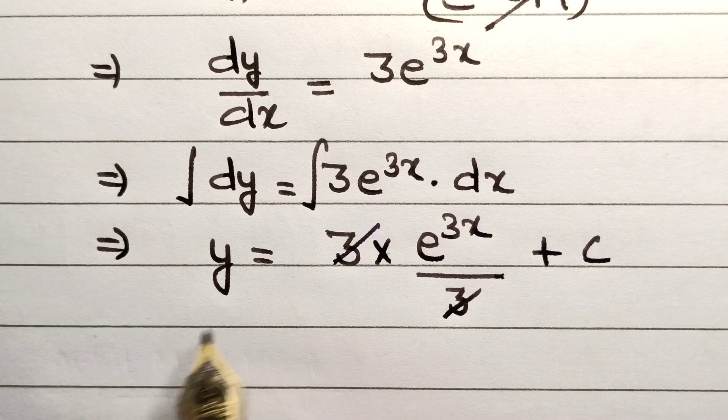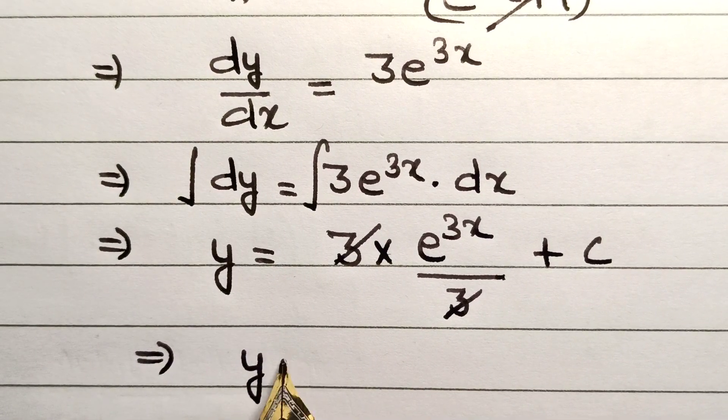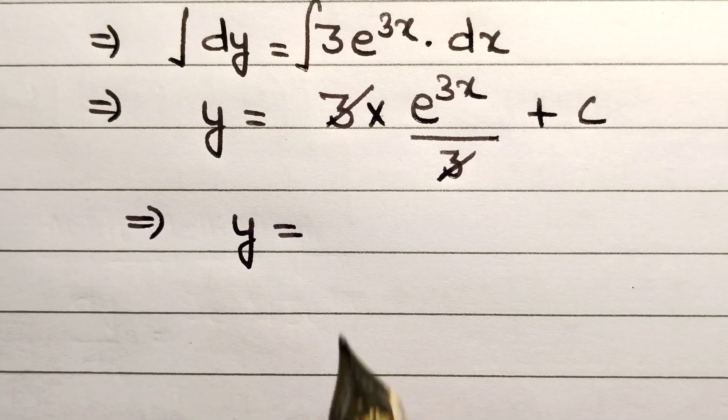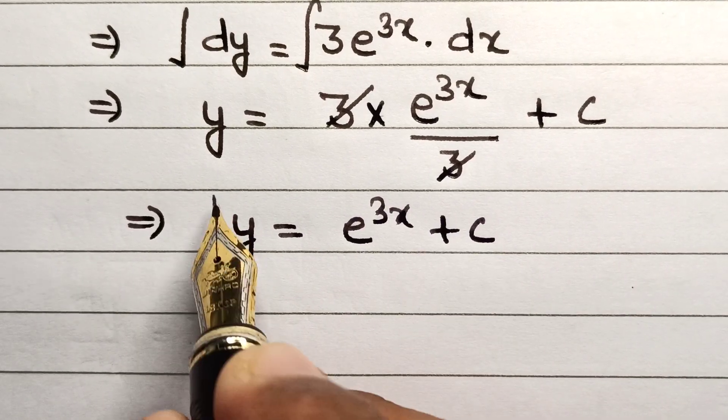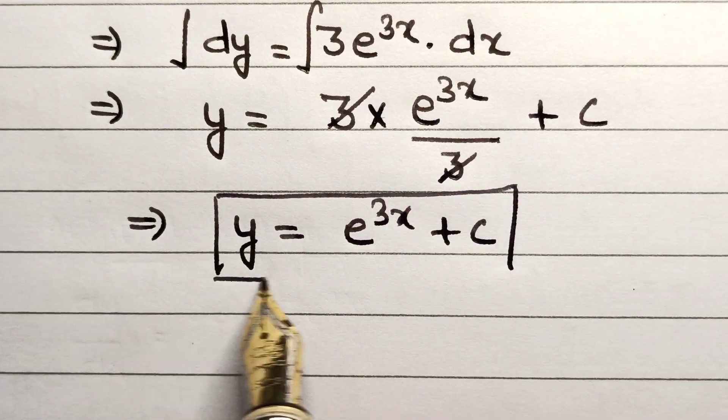This 3 and that 3 will cancel out. So the value of y finally comes out as: y equals e^(3x) plus c. This is the final answer we were looking for.